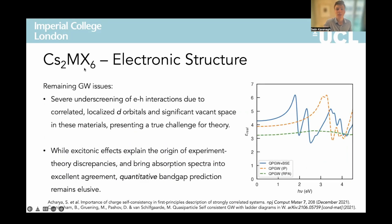Before wrapping up, I should mention that there remain some issues in the quantitative theoretical modelling of the electronic structure of these compounds. The combination of correlated, localized D-orbitals with significant vacant space in the crystal structure makes these compounds extremely challenging to accurately model, as it yields major underscreening of electron-hole interactions in the random phase approximation, which is employed within the GW approach. This means we actually require vertex-corrected GW calculations, which self-consistently include electron-hole screening effects, and have only recently been developed, but their implementation in computational packages is still in progress.